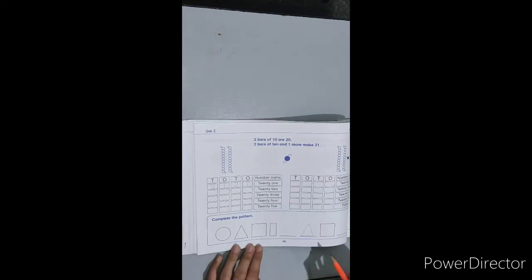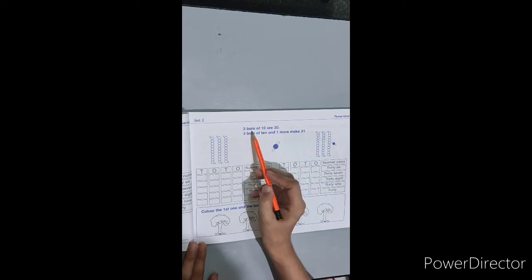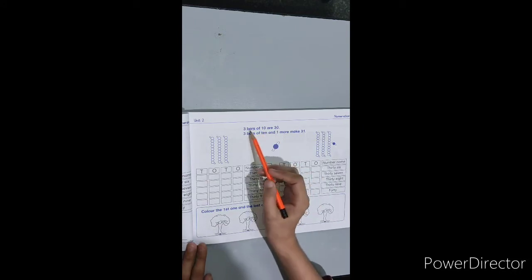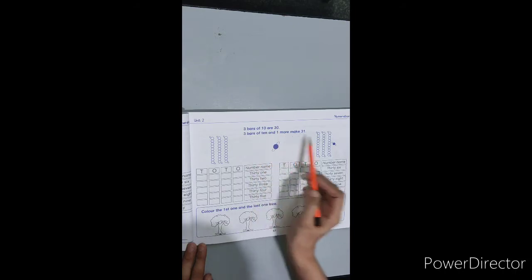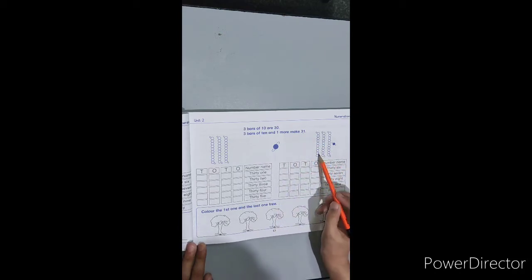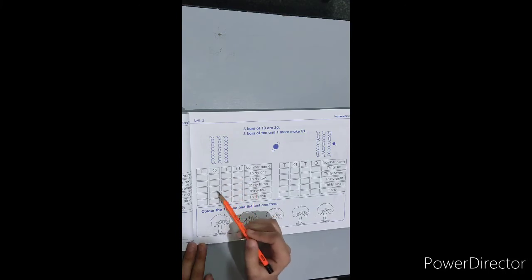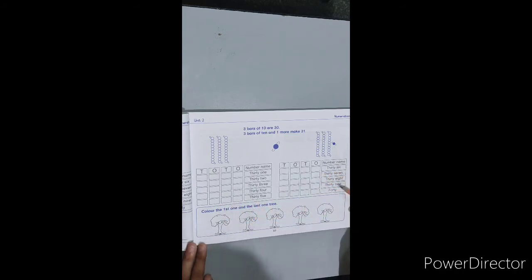Now move to page number 57. First of all, we write down the date here. Three bars of 10 are 30. On the previous page we learned two bars of 10. Three bars of 10 and one more make 31. Just like we completed page 56, you have to complete this page the same way. 31, 32, 33, 34, 35 — you have to write each number two times. 36, 37, 38, 39, 40.